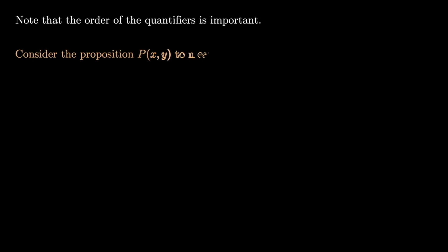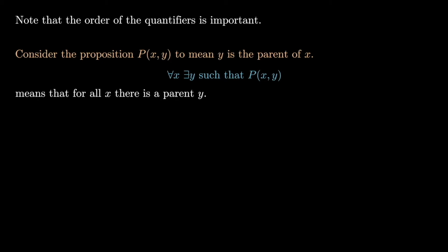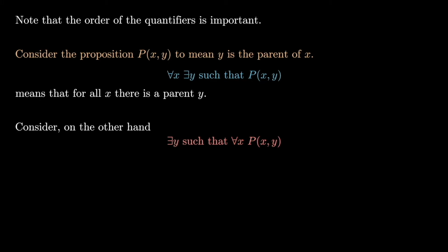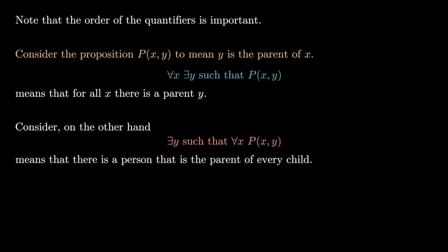It's very important to observe the order of the quantifiers. Let P(x, y) mean 'y is the parent of x.' The statement 'for all x there exists y such that P(x, y)' means that for every x there is a parent y. On the other hand, 'there exists y such that for all x, P(x, y)' — with reversed quantifiers — means there is one person who is the parent of every child. These are drastically different statements.